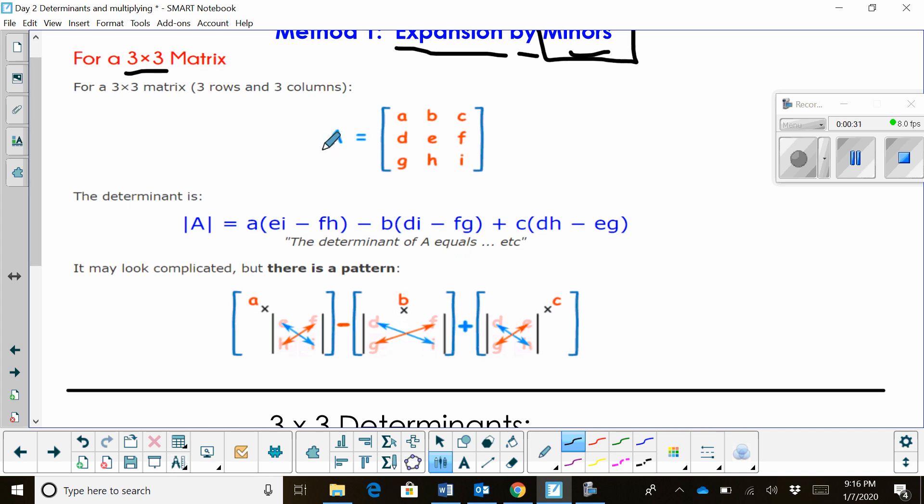So here's our example. We have the matrix A and we're going to look at the elements A, B, C is the first row, D, E, F is the second row, and G, H, I is the third row.